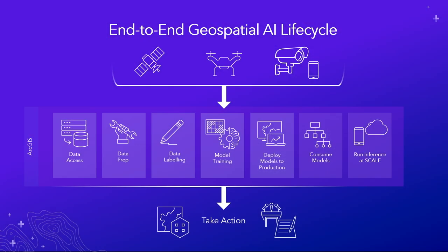So let's take a look at how it's done. You prepare data for deep learning. You train the models. You validate them using ground truth data. And then you deploy them into production and scale, of course, as necessary to meet your needs.